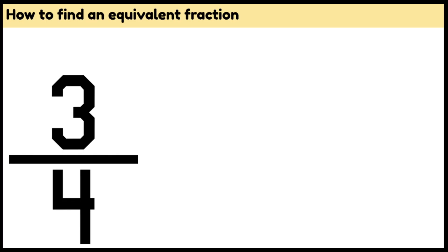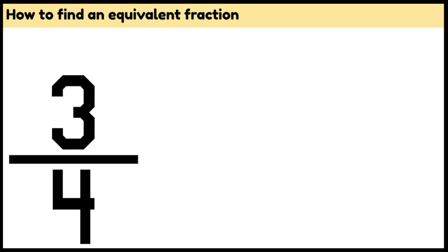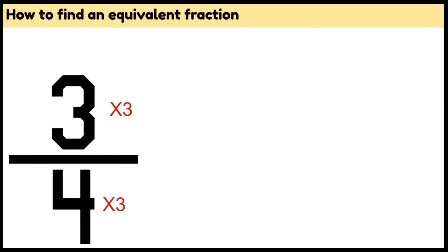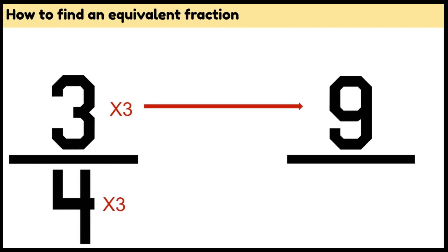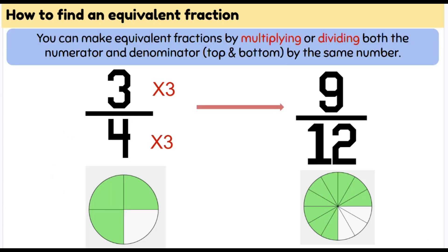Here we have three quarters. We can pick any number to multiply by — in this case we're going to pick three. So we're going to multiply our denominator by three, and whatever we do the bottom we need to do the top. So we multiply our numerator by three as well. Three times three gives us nine, and four times three gives us twelve.